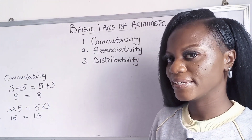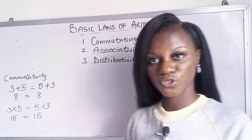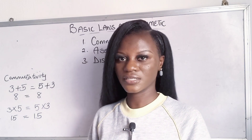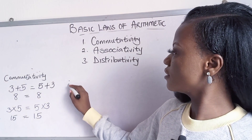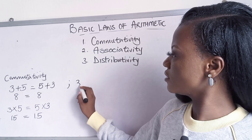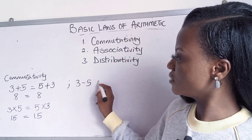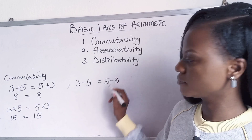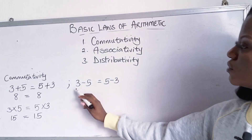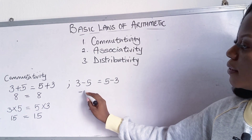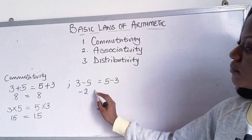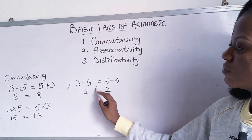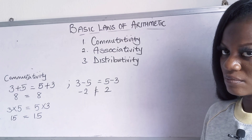But now let's try subtraction and see if we get the same thing. In a case where you have 3 minus 5, is it the same as 5 minus 3? Let's see. 3 minus 5 is minus 2. 5 minus 3 is 2. They are not the same.